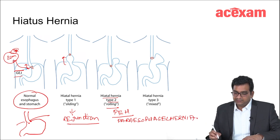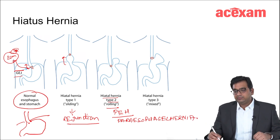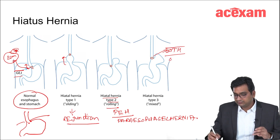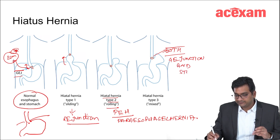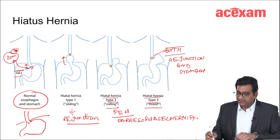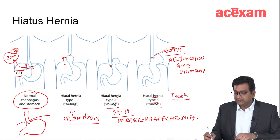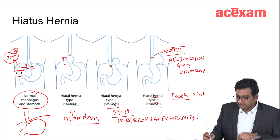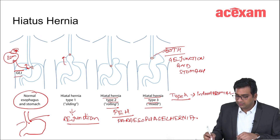Whenever there is herniation of both the GE junction and the stomach, it is known as type 3 hiatus hernia or mixed type of hiatus hernia. And there is type 4 hiatus hernia also, in which any other intra-abdominal organ is also herniated into the chest.